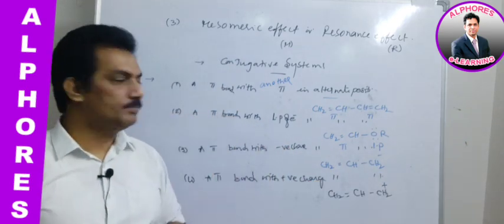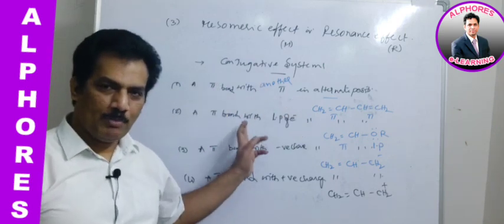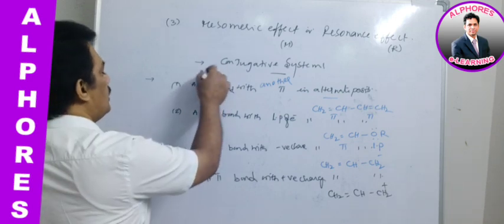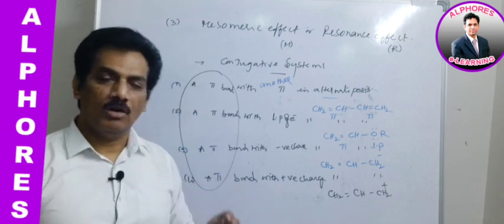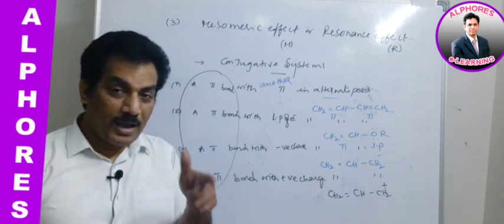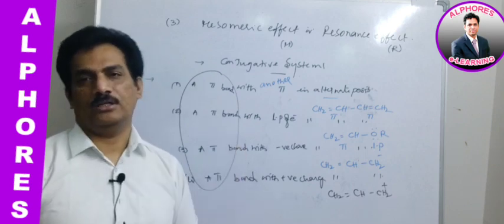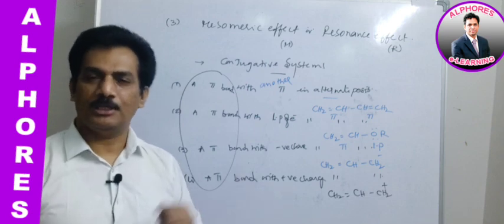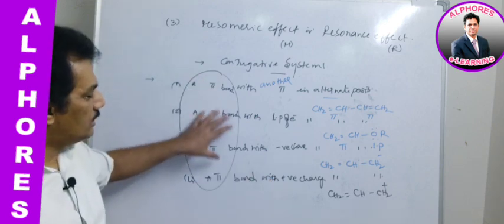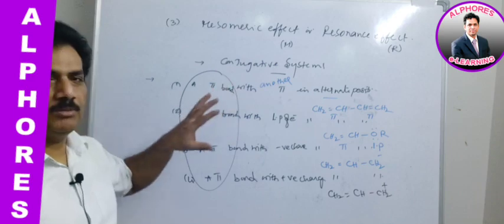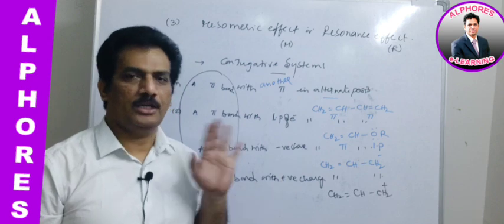There are many types of conjugations — lone pair with lone pair, positive with negative charge, etc. — but the highest resonance influence is observed in the pi–pi conjugation type. If this type of arrangement is observed in any molecule, the molecule is said to be a conjugative system. In conjugation, it is the pi-bonded electrons that undergo migration or displacement — not the sigma-bonded electrons.